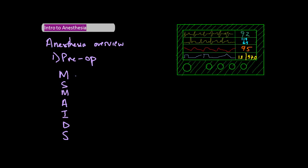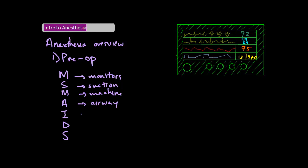Miss Maids stands for: M — monitors, so blood pressure and EKG monitors; S — suction; the second M is for machine, make sure the anesthesia machine works; A is for airway, so the laryngoscope, stylet, and oral airway; I is for IV materials for placing an IV; D is for drugs; and S is for any special equipment pertaining to that case.